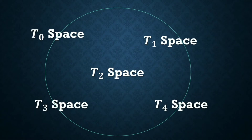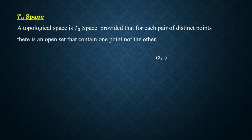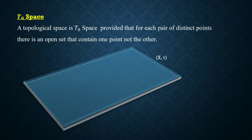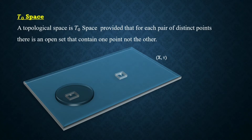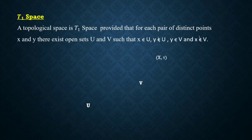Here we will discuss the definitions of T₀ space, T₁ space, T₂ space, T₃ space, and T₄ space. The first definition is T₀ space: a topological space is T₀ provided that for each pair of distinct points there is an open set that contains one point but not the other. Suppose the given figure is a topological space and let x and y be two distinct points; the space is said to be T₀ if there is an open set containing one point but not the other.